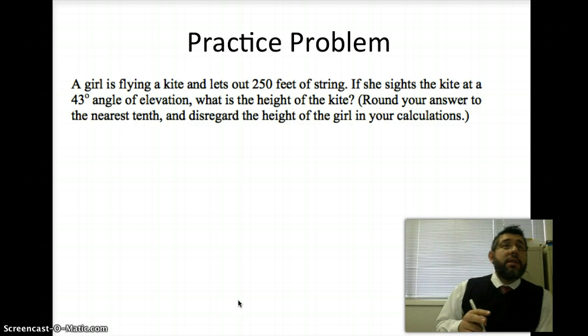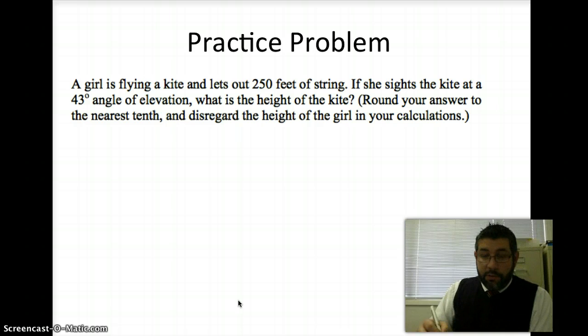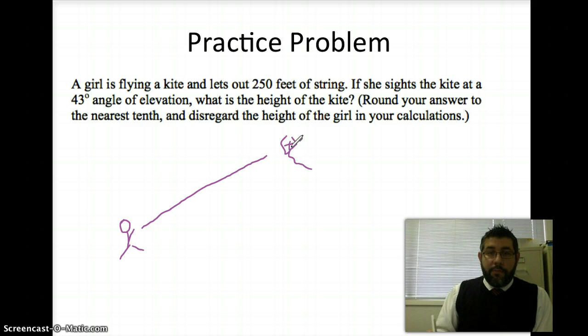So, here's a practice problem. Go ahead and pause it, and then you can try it out and see if you get the right answer. So, we have a girl flying a kite. Here's the girl. She's flying the kite. The kite's up here. There's a kite. And the kite has 250 feet of string. If you've flown a kite, here's the string. This is 250 feet.